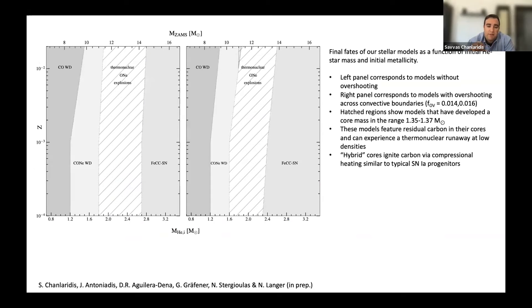Now these diagrams show the final fates of our models as a function of initial mass and initial metallicity. And by constructing a grid of more than 350 models, we were able to constrain the initial mass of these helium stars that develop oxygen-neon cores that can in principle grow to the Chandrasekhar mass limit and experience a thermonuclear runaway at low densities. And depending on the adopted parameters such as the initial metallicity, the overshoot mixing, and the wind efficiency, we found that this mass range is between 1.8 to 2.7 solar mass for models without overshooting and around 1.6 to 2.5 solar mass for models with overshoot mixing across all convective boundaries.